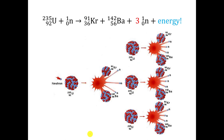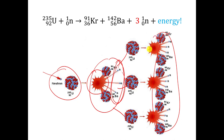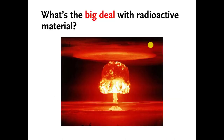This is called a chain reaction. You take one uranium, hit it with a neutron, get three more neutrons and some energy. Those three neutrons slam into three more uraniums, get a whole bunch more neutrons and more energy, and this keeps going until you run out of uraniums. That's how the first atomic bomb worked.